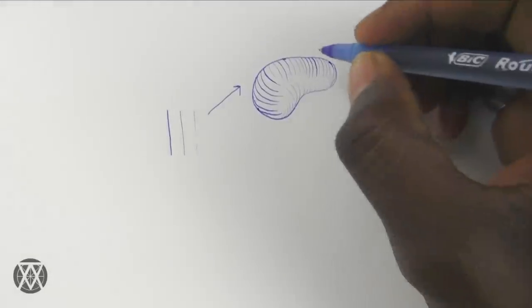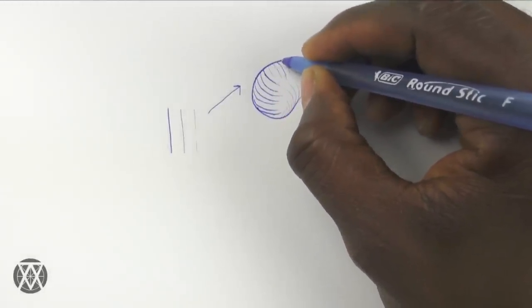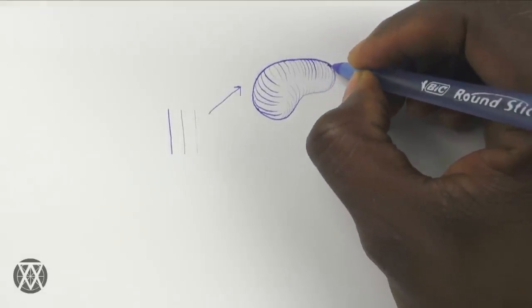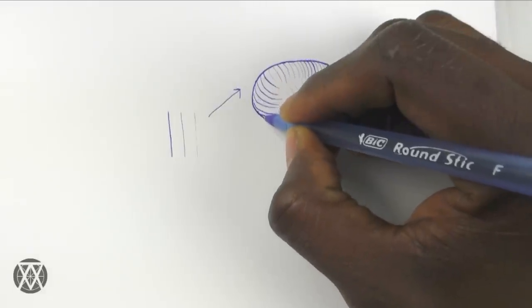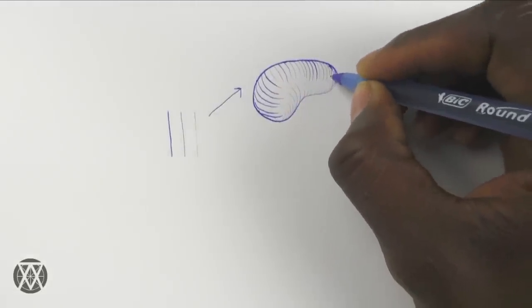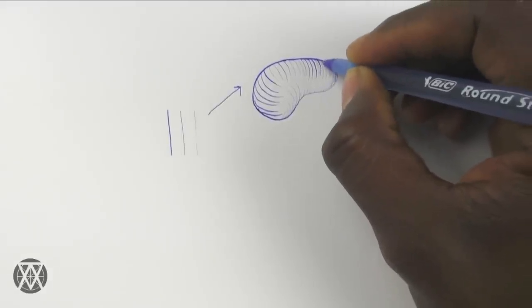See that? So with this I can basically make lines that are really thick and bold, and lines that are really thin and light.